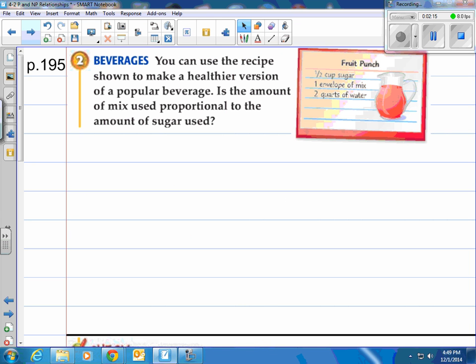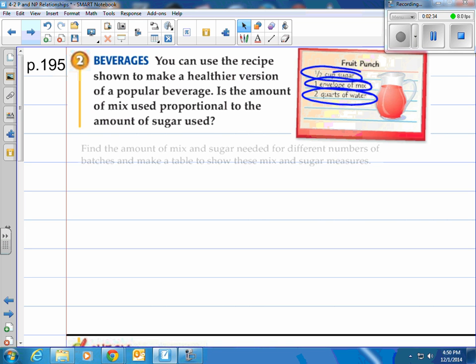Take a look at number 2 here. You can use the recipe shown to make a healthier version of a popular beverage. Fruit Punch. Is the amount of mix used proportional to the amount of sugar used? Well, let's see here. They got a half a cup of sugar, one envelope of mix, and two quarts of water. That's to make Fruit Punch. What do we do? Find the amount of mix and sugar needed for different numbers of batches. To make a table to show these mix and sugar measures.